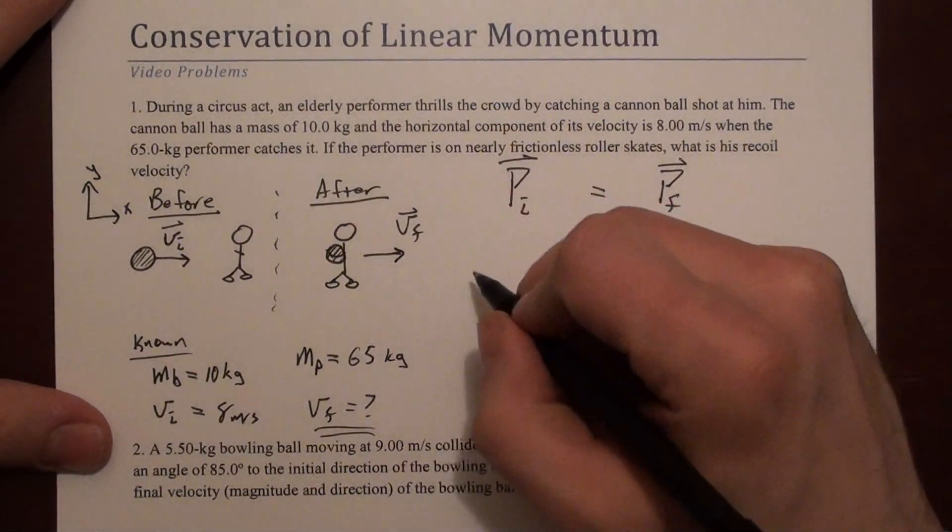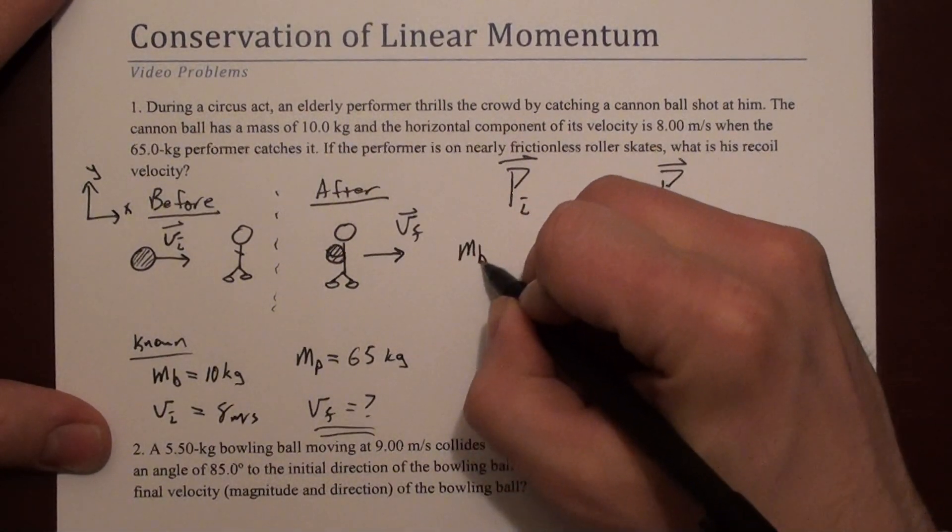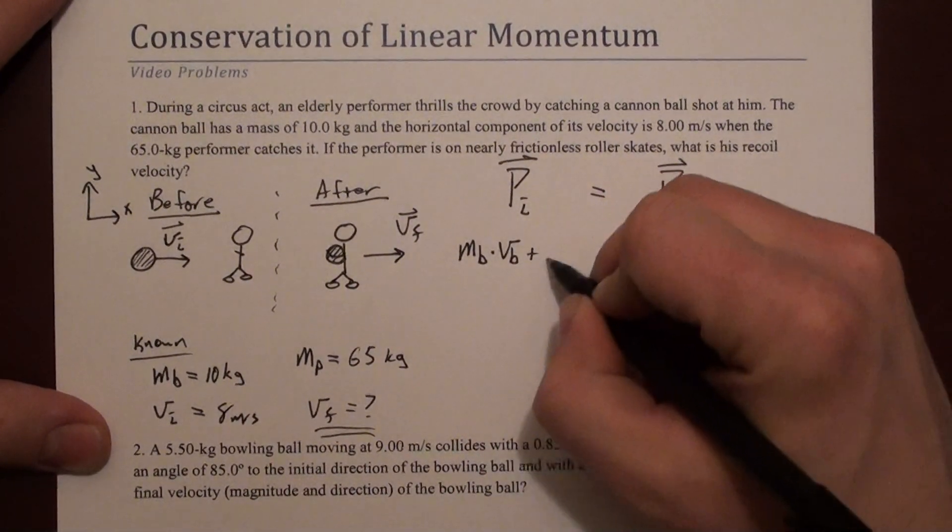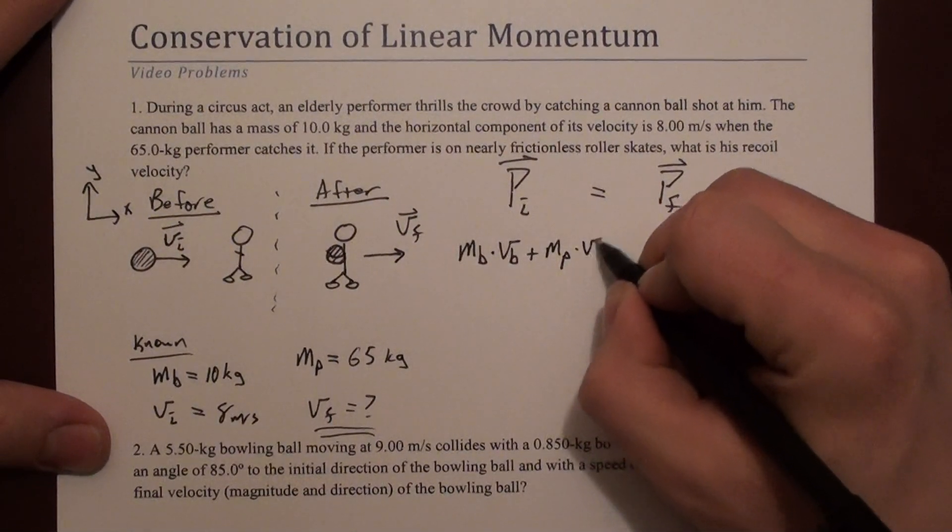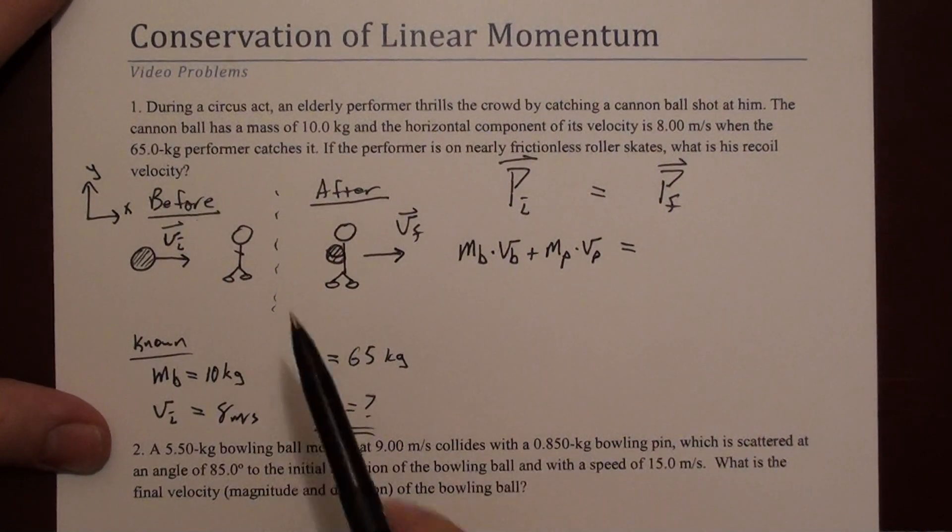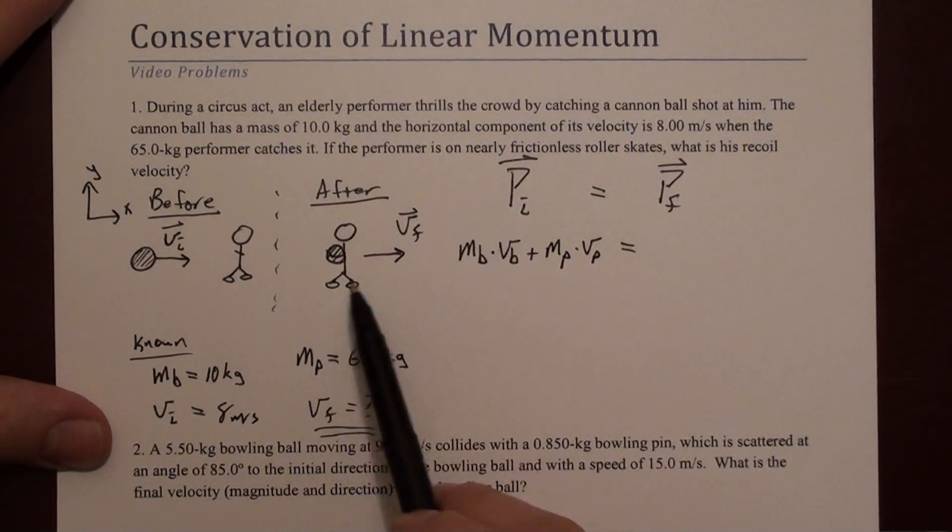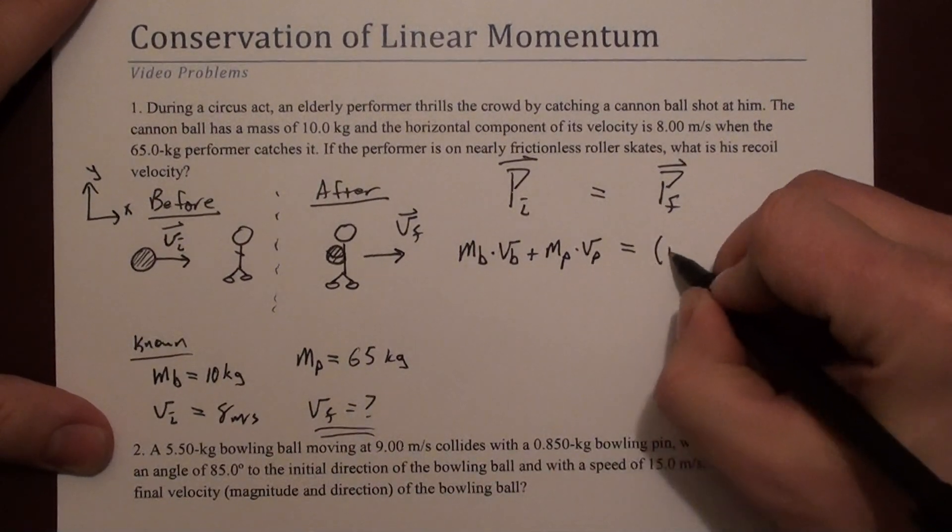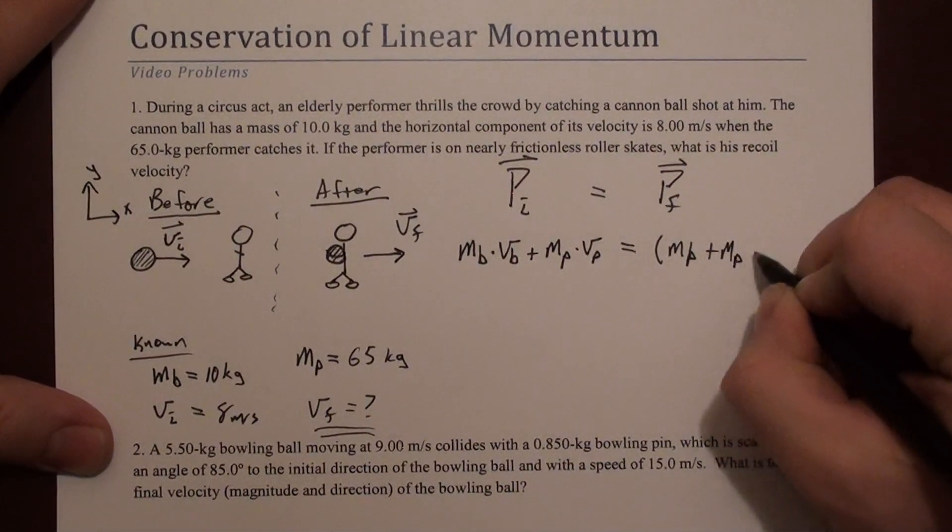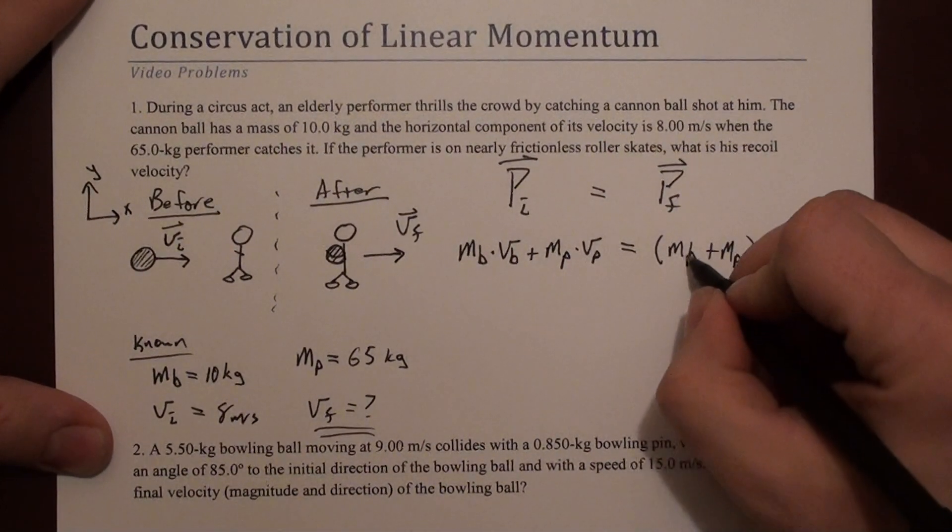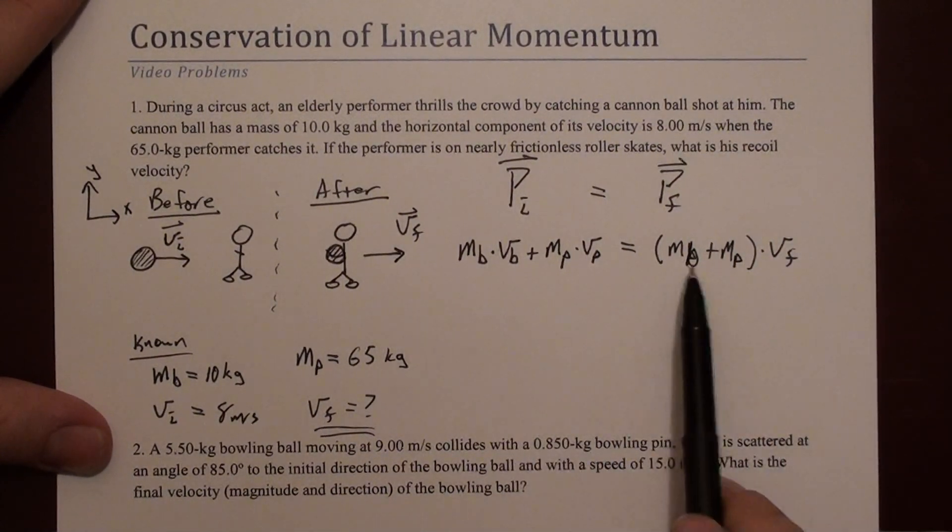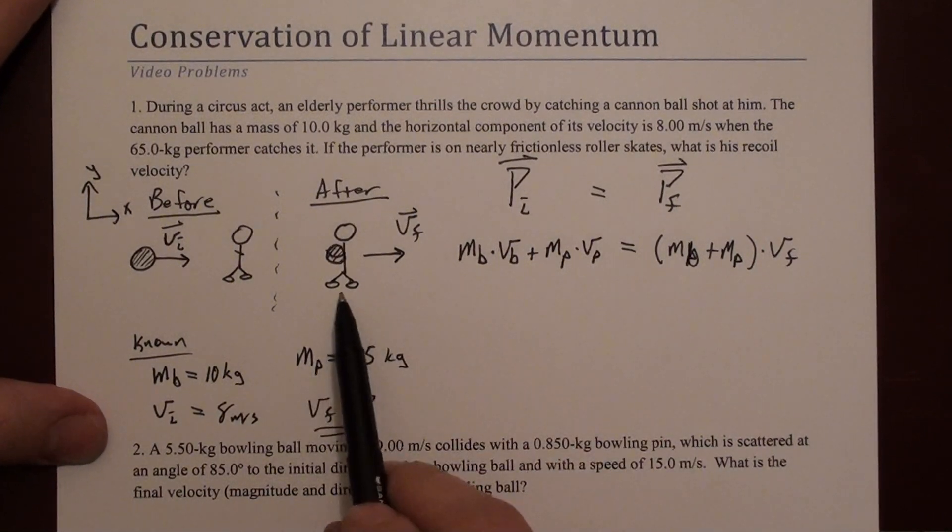We write the mass of the ball times the velocity of the ball plus the mass of the performer times the velocity of the performer equals the same thing afterward. But we recognize that this is now a single object, so we're going to say mass of the ball plus mass of the performer times v final. It's convenient to do this, and it also represents what's going on.